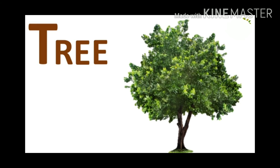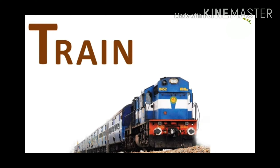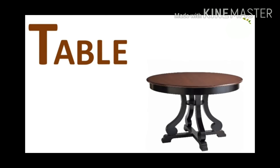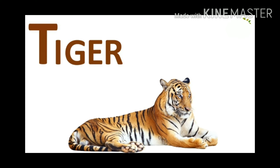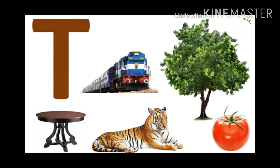After S, letter T. T for Tree. T for Train. T for Table. T for Tiger. T for Tomato. Letter T has the sound T.